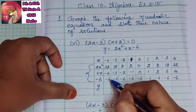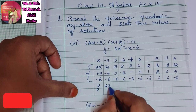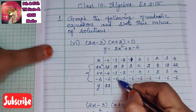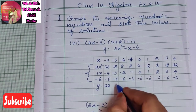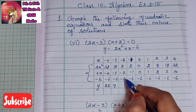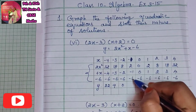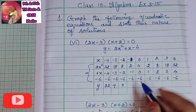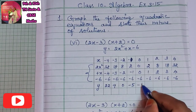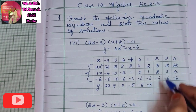The x values are -4, -3, -2, -1, 0, 1, 2, 3, 4. The -6 is a constant so I will write it in all the boxes. Now I will add the three columns: 2x², x, and -6.